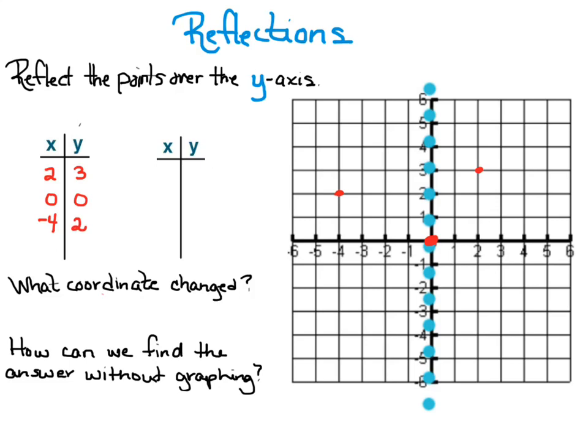So let's just take a look at that first point. If I were to reflect that over the y-axis, my new point would be at negative two, three. Zero, zero is an interesting value because it doesn't have a reflection point because it's on the line of symmetry. The third point, negative four, two, when I reflect it over the y-axis it becomes positive four, two.